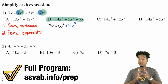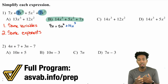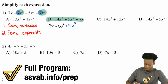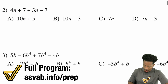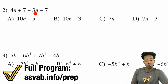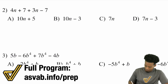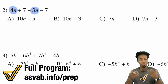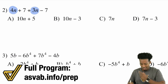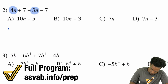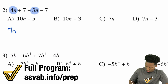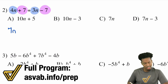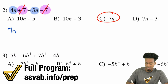Let me take you through a few more examples, including how to handle negatives. Number two: we have 4n + 7 + 3n − 7. There are two sets of like terms. First, 4n and 3n — same variable n with exponent of one. 4 plus 3 gives us 7n. Then we have plus 7 minus 7 — those cancel out completely. So the answer is just 7n.